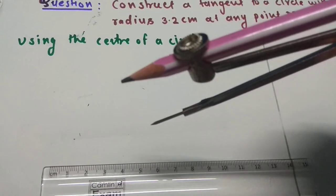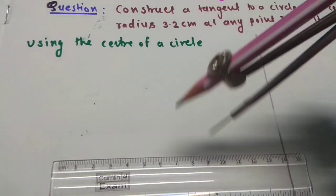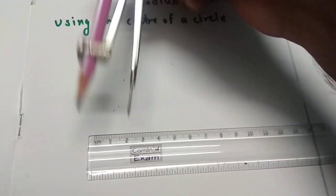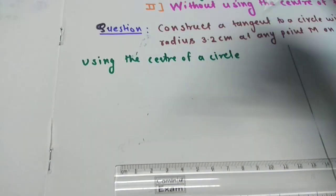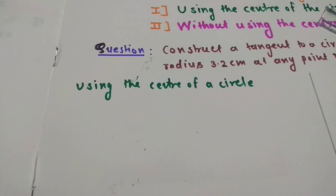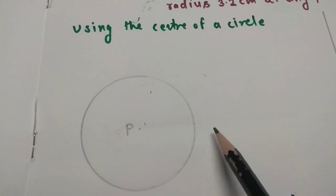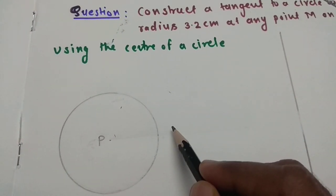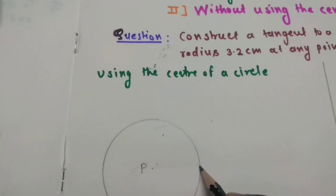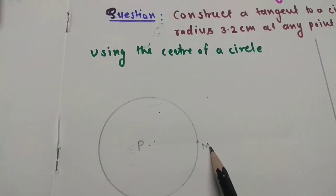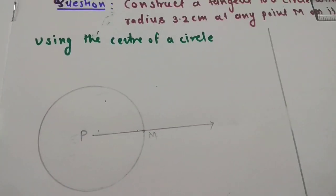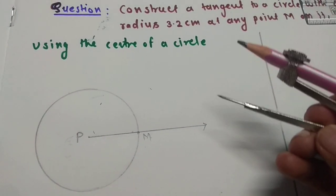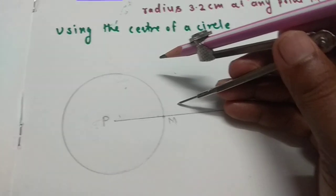First draw a circle with center P and radius 3.2 centimeter. See, the radius is 3.2 centimeter. Now take any point M on the circle, any point M on the circle. Draw ray PM. This is ray PM.